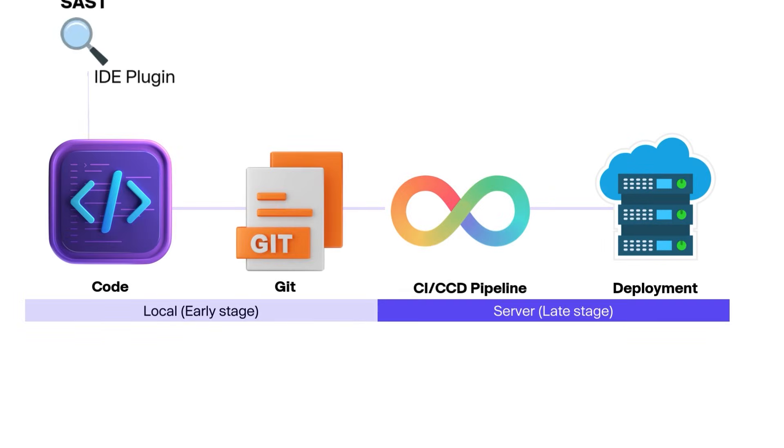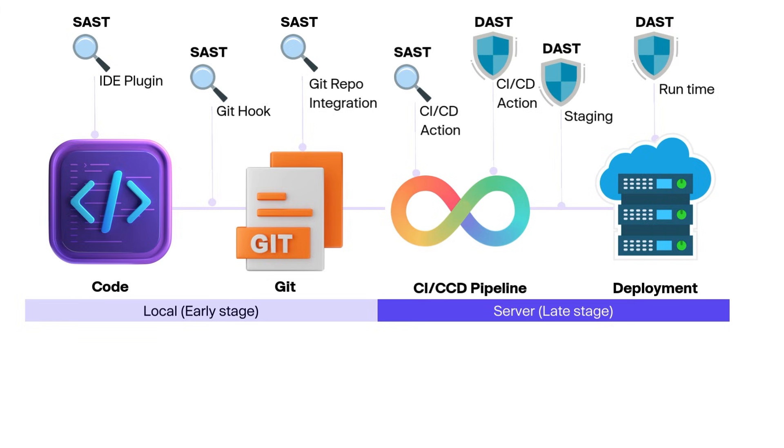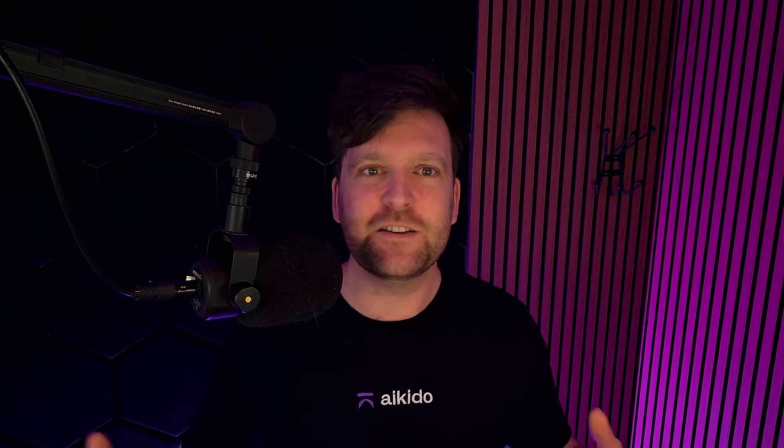One of the biggest advantages of SAST over DAST is how early vulnerabilities can be detected in the software development lifecycle. SAST tools can run at multiple different stages — on your CI/CD pipeline, connected to your Git repositories, as Git hooks, or even in your IDE. This makes it very easy for a developer to find a vulnerability early and correct it, without needing to involve multiple team members, go to security, or release vulnerability reports.